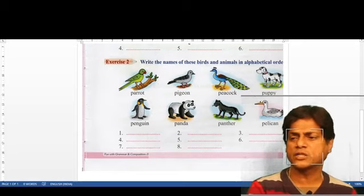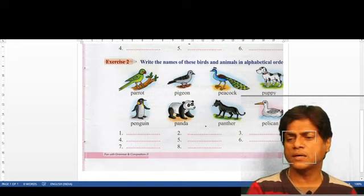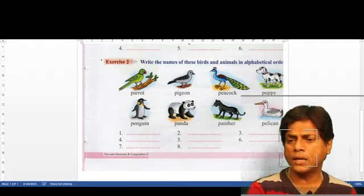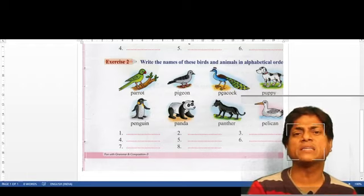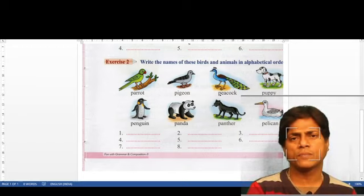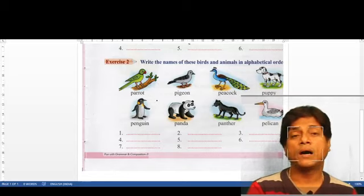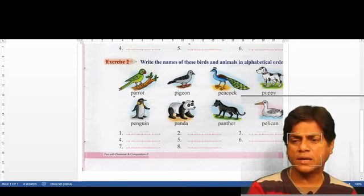Look - parrot, pigeon, peacock, puppy, penguin, panda, panther, pelican - they all start with P. So when we arrange these animal names or bird names, obviously we cannot arrange by first alphabet because the first alphabet is the same. So we have to look at the second alphabet. Parrot has P with A.